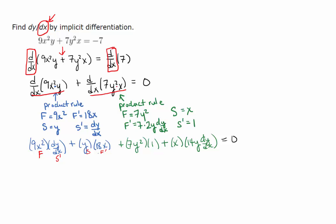All right, then we had another term over here that also was a product. So within that, I defined the first function to be 7y squared, the second function to be x. So the derivative of 7y squared is 14y dy dx. We need to remember that dy dx. We're differentiating with respect to x. And then the derivative of x is just 1. So again, we have the first function, derivative of the second, second function, derivative of the first.